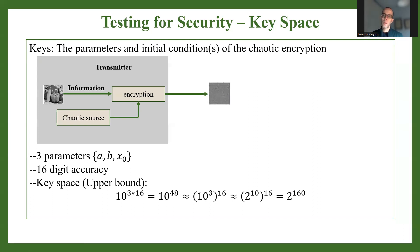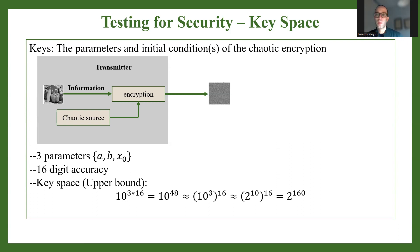As a rule of thumb, if you are considering chaos-based encryption, it is much better to use chaotic maps that have at least two parameters and one initial condition — three parameters overall. This results in a much better keyspace size, much more suitable to resist brute force attacks, especially as the rise of quantum cryptography may push this 2-to-the-100 limit much higher in the future.